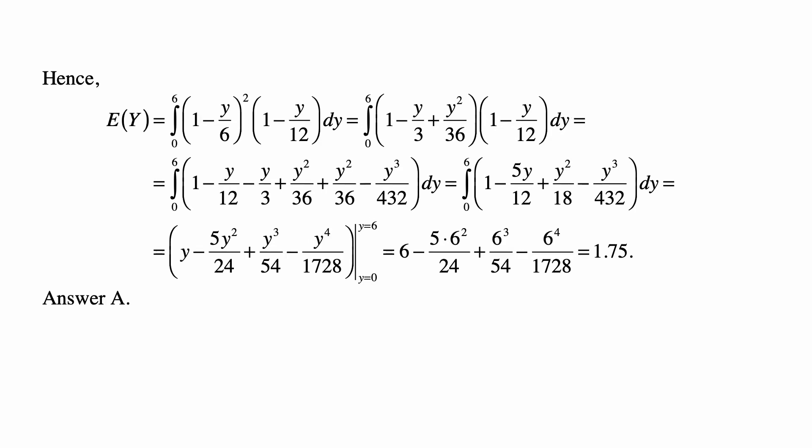And now we use the survival function we calculated to find the expected value, because the random variable Y is non-negative with probability 1, so the expected value of Y is the integral from 0 to 6 of its survival function. Beyond 6, the survival function is 0. So that's why we don't really need to do anything beyond 6.